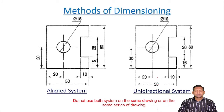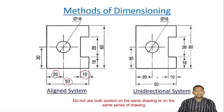The first difference between the aligned system and the unidirectional system is in the aligned system there will be no break in the dimension line. The second difference is that the values — like 20, 10, 50 — are always placed above the dimension line. That is the second difference when comparing aligned with unidirectional.